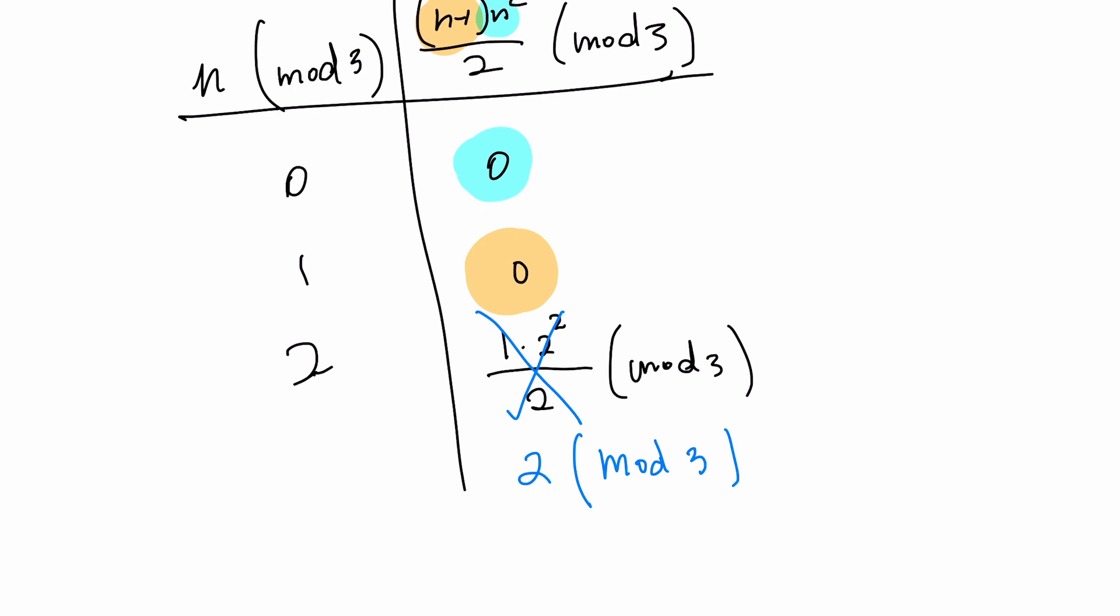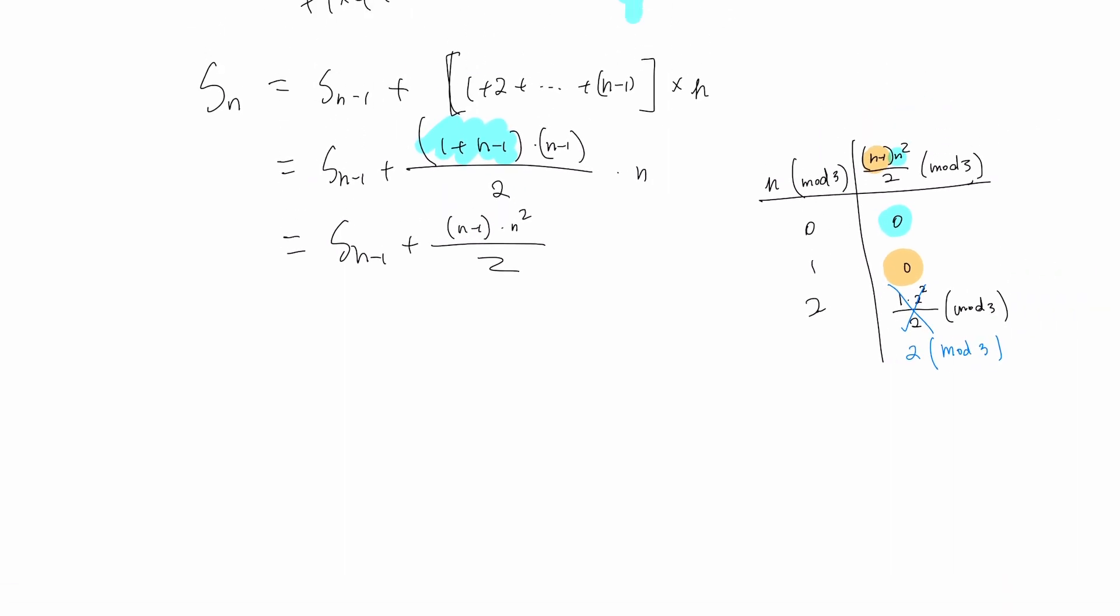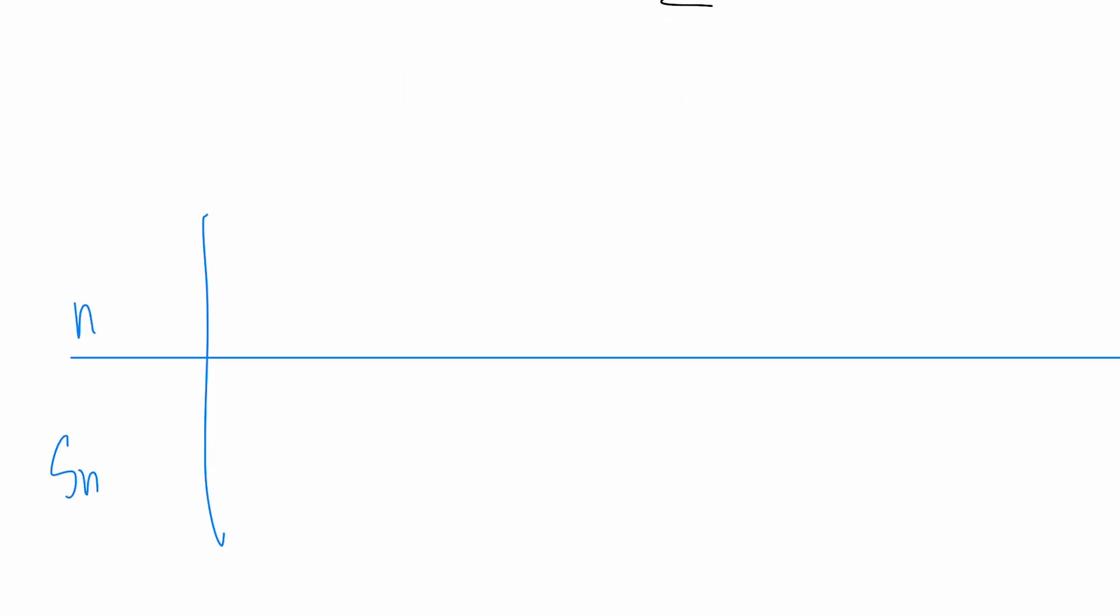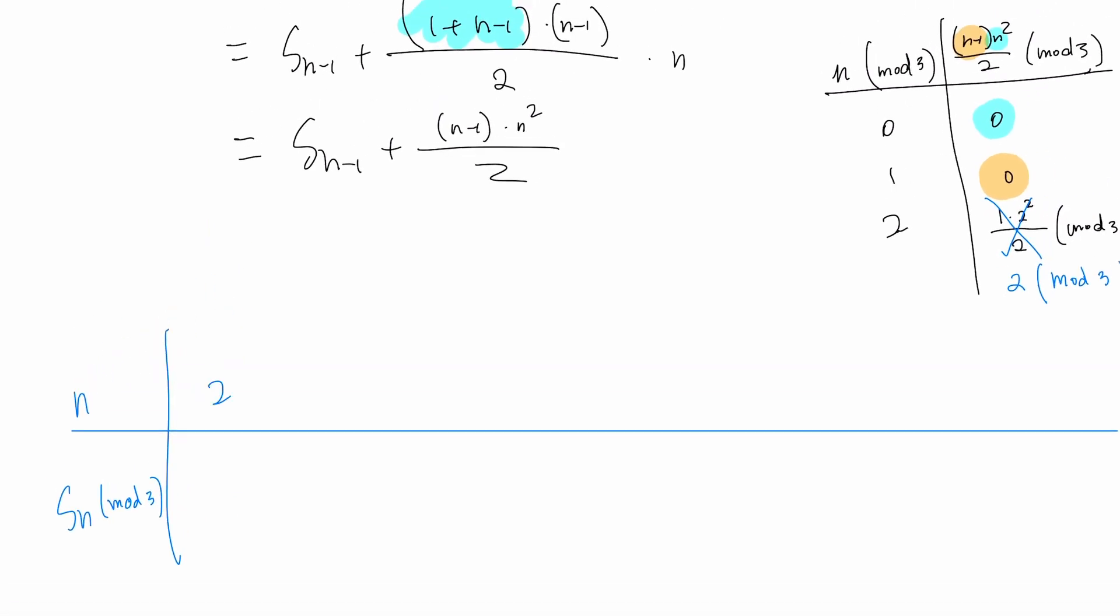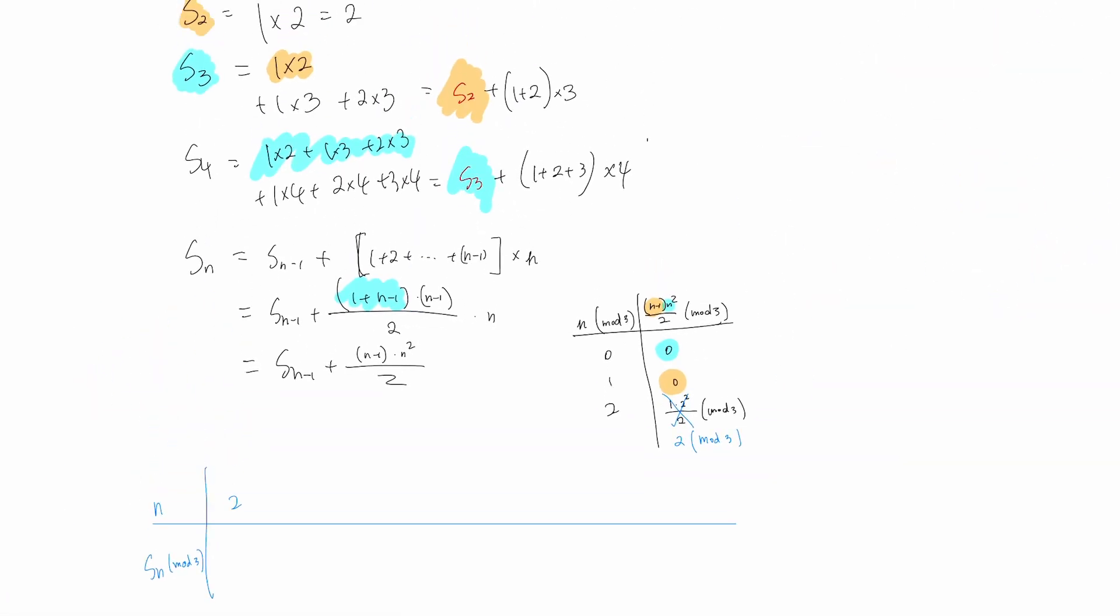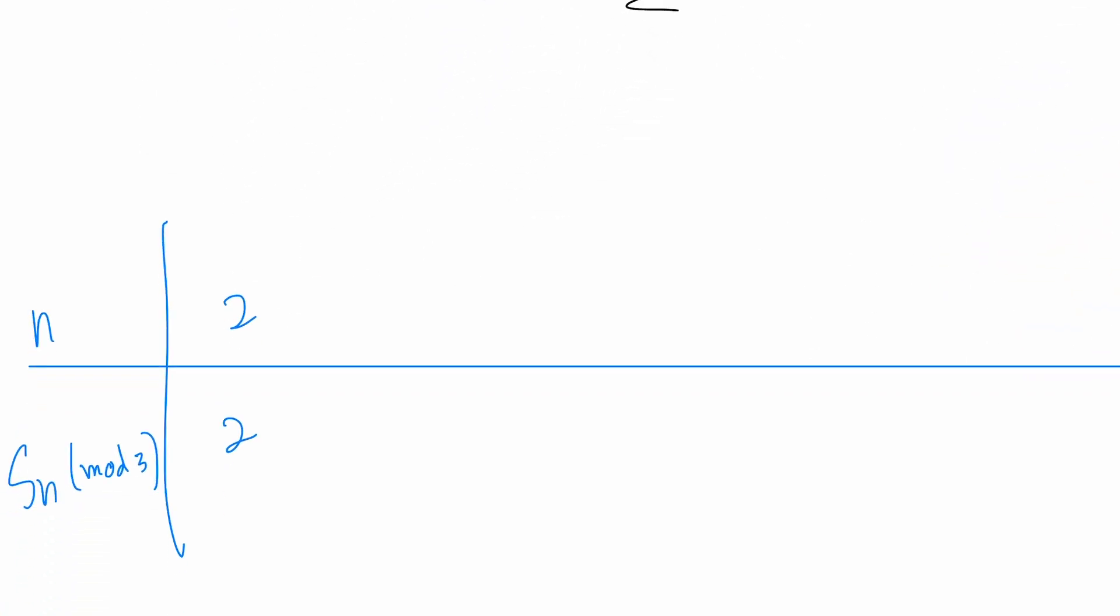Alright, so now we have all of these. We can list a chart. Let's say we have n and S_n mod 3. We don't have 1, so we start at 2. We know that value equals 2, so we get 2.